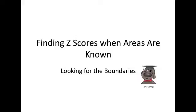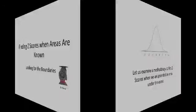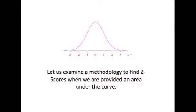Welcome to the seventh lecture in Module 2. This lecture is entitled Finding Z-Scores When Areas Are Known, Looking for the Boundaries, brought to you by the dog. Now we're going to examine a methodology to find Z-scores when we're provided an area under a curve which is centered on the mean.